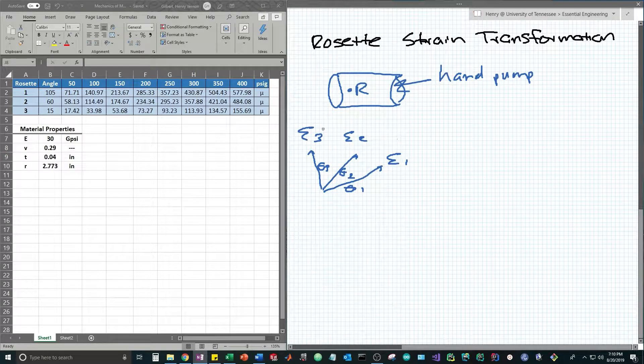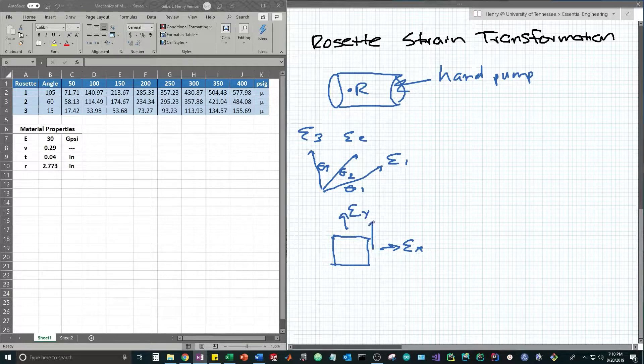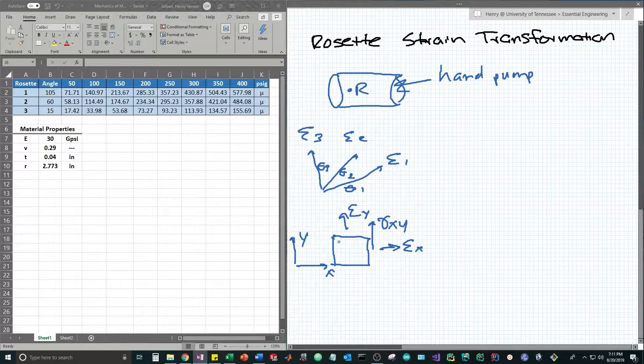In order to get from these three measured strains to stress, we need to understand a simple principle about strain transformation. Say we have a cube here and we're applying two strains epsilon x and epsilon y along with a shear strain of gamma xy. These are called epsilon x and y because they go along with a coordinate system x and y here.